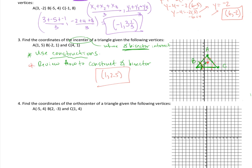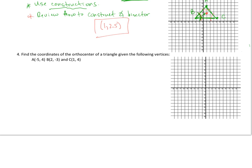Moving on to the last problem, we're asked to find the orthocenter, given the vertices of the triangle. Let's plot them on the grid: point A at (−5, 4), point B at (2, −3), and point C at (1, 4). This gives us a triangle at a slight angle.